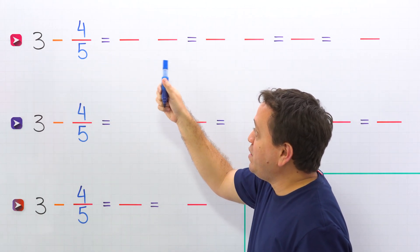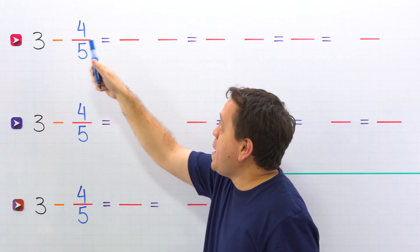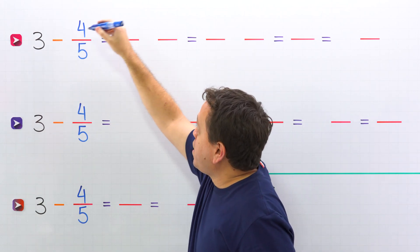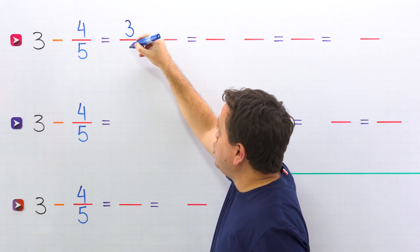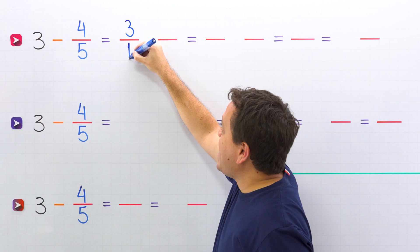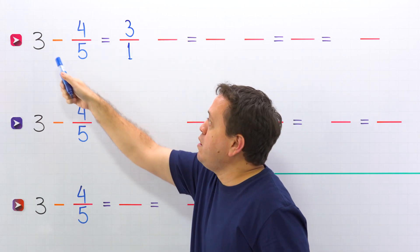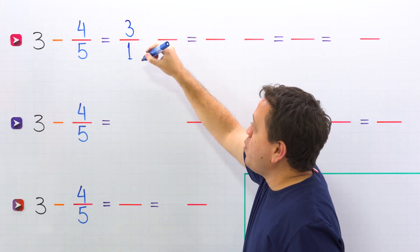To find the difference, first we convert the whole number to a fraction. To convert 3 to a fraction, we just need to put 1 as the denominator. In that way, 3 is equivalent to 3 over 1.